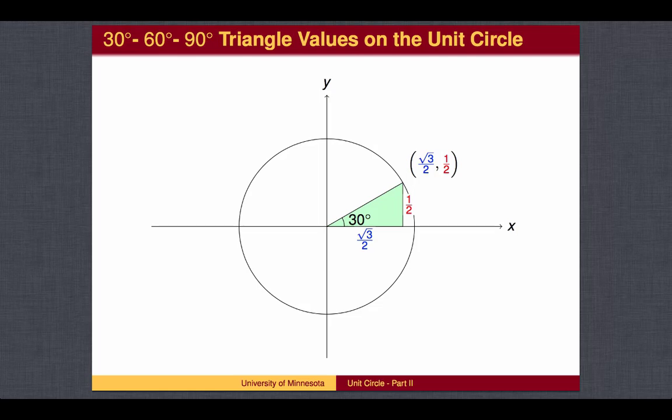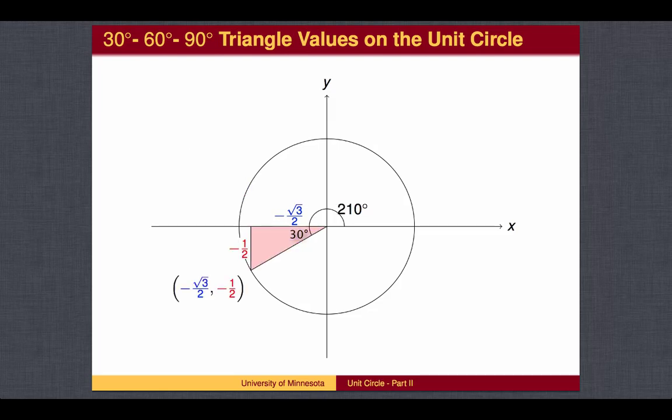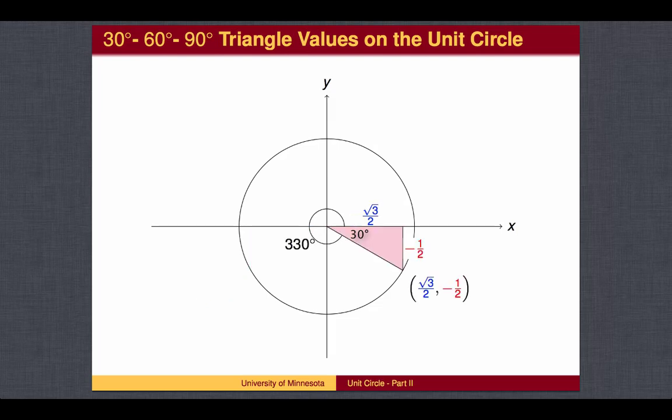In the first quadrant, the angle is 30 degrees, and therefore the cosine of 30 degrees is the square root of 3 over 2, and the sine of 30 degrees is 1 half. We can also find cosine and sine values for 30 degrees back from 180, which is 150 degrees; 30 degrees forward from 180, which is 210 degrees; and 30 degrees back from 360, which is 330 degrees.